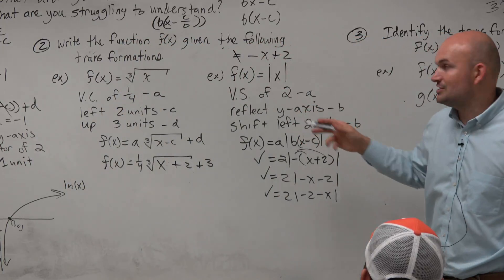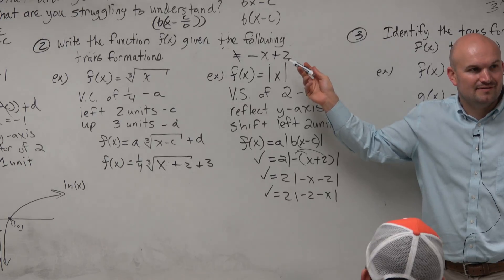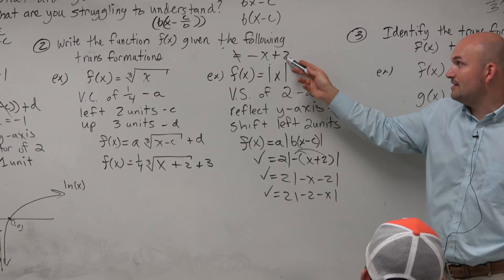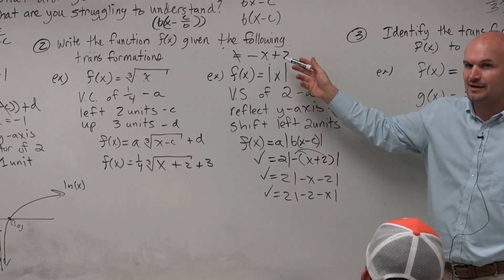That's what they're going to put in. Because they're not going to put the parentheses there. They're not going to put the b outside. So they'll just write, oh, it's a negative. And then, oh, it's left 2. Got it. No, no, no.